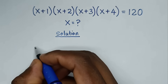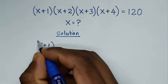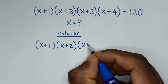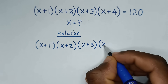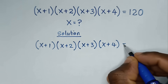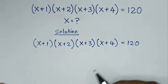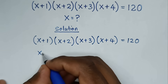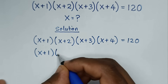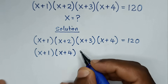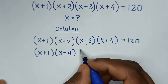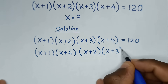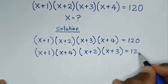For this problem, (x+1)(x+2)(x+3)(x+4) = 120. We'll start by multiplying (x+1) times (x+4), and separately (x+2) times (x+3), so we have [(x+1)(x+4)] × [(x+2)(x+3)] = 120.